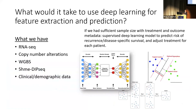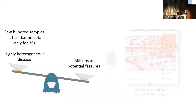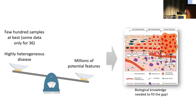I've thought about what it would take to use deep learning for feature extraction and prediction for this problem. We have RNA-seq, CNAs, whole-genome bisulfite sequencing, another omics approach for a different epigenomic mark, as well as a lot of clinical and demographic data. If we had sufficient sample size with appropriate metadata like treatment and outcome, we could potentially use a supervised deep learning model to predict the risk of recurrence or survival. But we only have — or will ever be able to get — a few hundred samples at best, and for some of these data we only have them for 36. This is a highly heterogeneous disease, and on the other hand we have potentially millions of features. This imbalance is exactly the type of problem where you need to rely heavily on biological or domain-specific knowledge to help fill the gap.